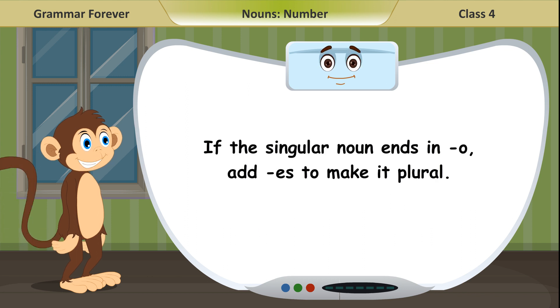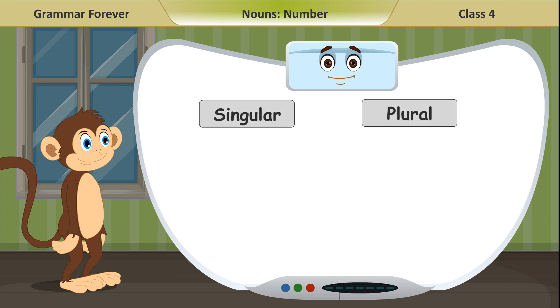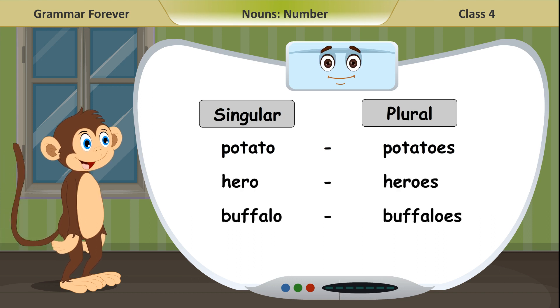If the singular noun ends in O, add ES to make it plural. Singular, plural: Potato, potatoes. Hero, heroes. Buffalo, buffalos. Volcano, volcanoes.